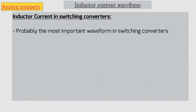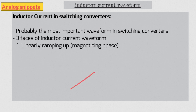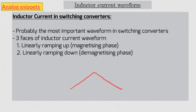The inductor current waveform in switching converters is one of the simplest kinds of waveforms you can imagine. In fact, in a functioning converter it can come only in three varieties: it can either ramp up linearly, ramp down linearly, or remain at zero. This third phase is only valid for DCM operation.